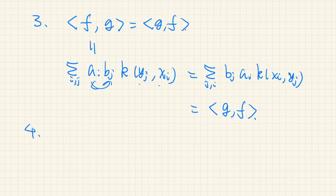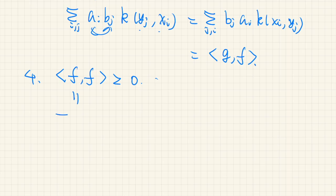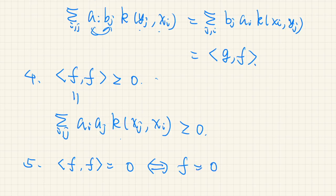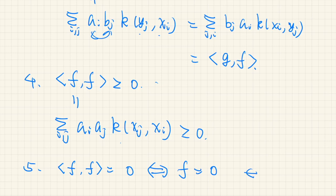The fourth axiom is positive semi-definiteness: for any function f, ⟨f, f⟩ ≥ 0. This is almost trivial due to the positive semi-definiteness of the kernel function. The left-hand side equals sum over i, j of a_i · a_j · k(x_j, x_i). Due to positive semi-definiteness of the kernel function, this is of course greater than or equal to 0. The fifth axiom — that ⟨f, f⟩ = 0 if and only if f is identically zero — requires more preparation, so we will prove it later. Assuming you accept this final point, this product is indeed an inner product defined on the space V.